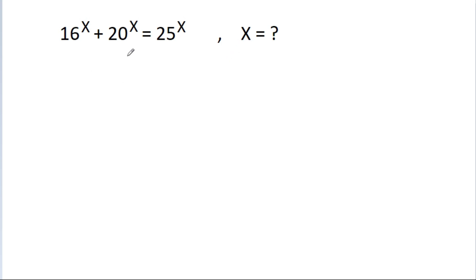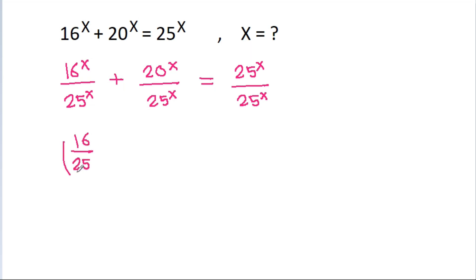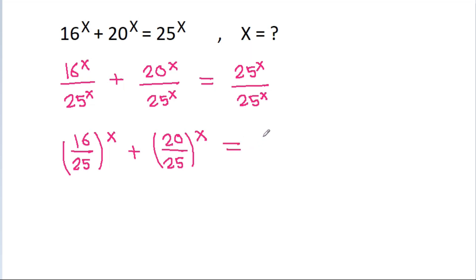So if we divide both sides by 25 power x, then we will get 16 power x by 25 power x plus 20 power x by 25 power x is equal to 25 power x by 25 power x. And that gives us 16 by 25 power x plus 20 by 25 power x equal to 1.